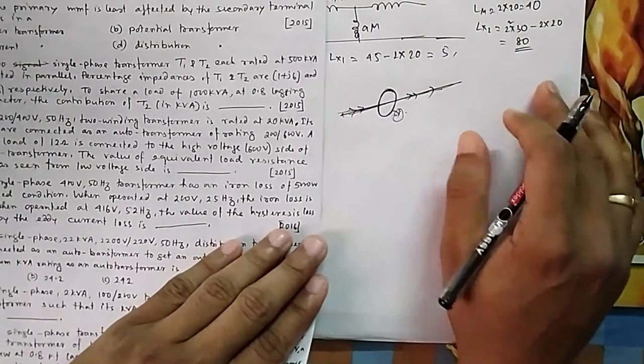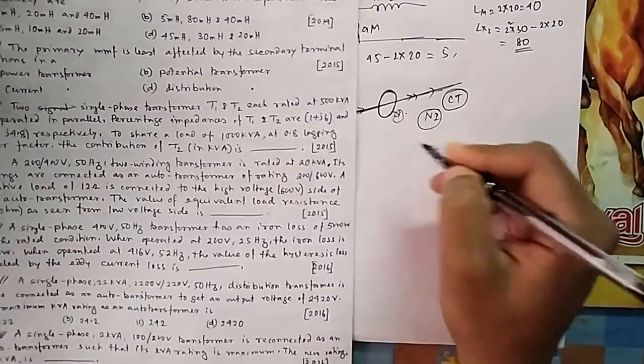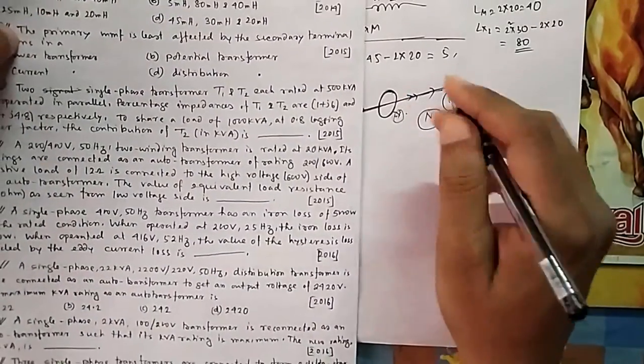So it is CT, because the MMF is created by nI. So if I is very small, then obviously it will be reduced. Whatever - in PT it is not the case. So obviously the answer is option C.